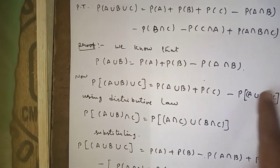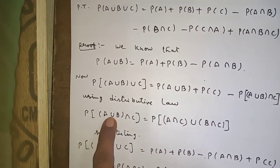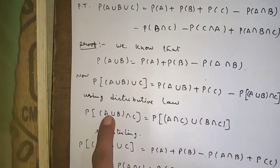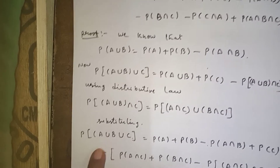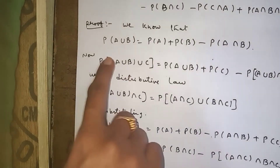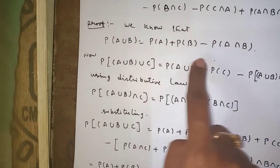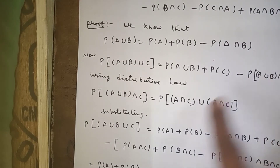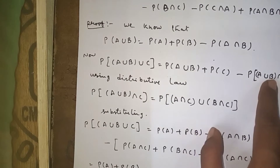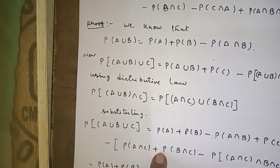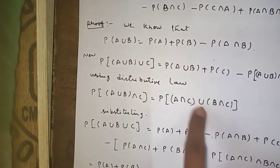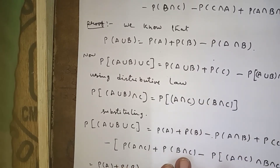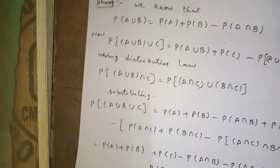Applying the distributive law, (A ∪ B) ∩ C = (A ∩ C) ∪ (B ∩ C). Substituting and expanding P(A ∪ B) = P(A) + P(B) − P(A ∩ B), and simplifying the complete expression, you will get P(A ∪ B ∪ C) = P(A) + P(B) + P(C) − P(A ∩ B) − P(B ∩ C) − P(A ∩ C) + P(A ∩ B ∩ C). Hence proved.